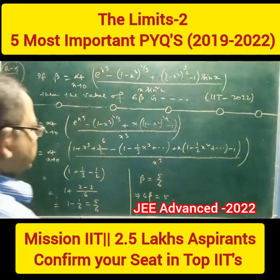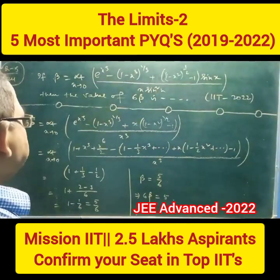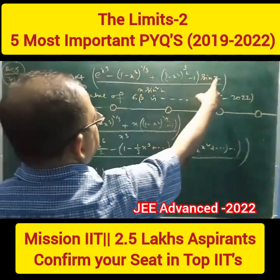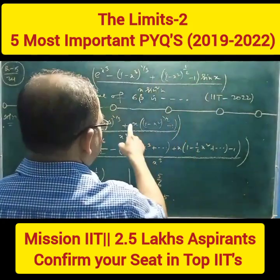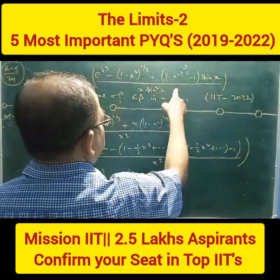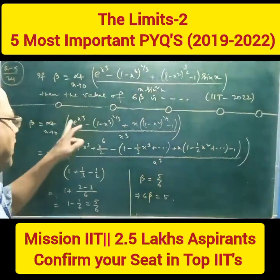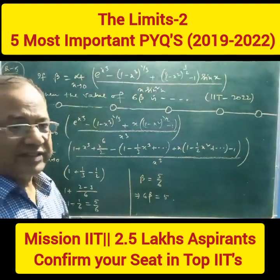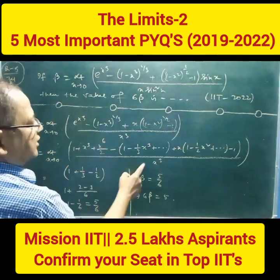So like this, e to the power x cube minus — the limit. We rewrite sin x by x into x, and sin square x as x square into x square, so that is x cube. Now e to the power x ka expansion: 1 plus x plus x square by 2 factorial, like this. Ab toha hamay ar nahi jana.